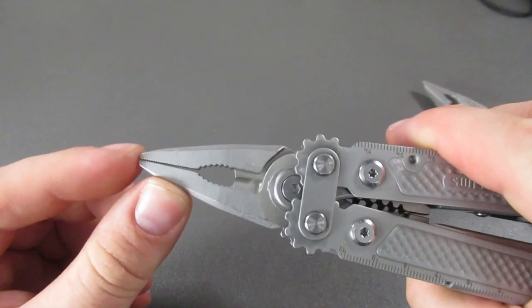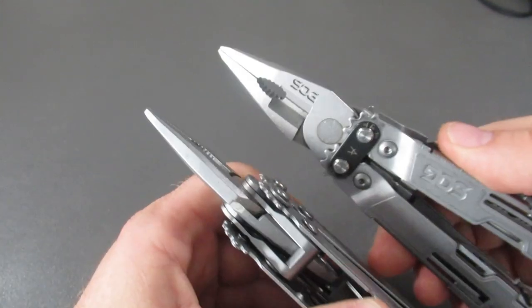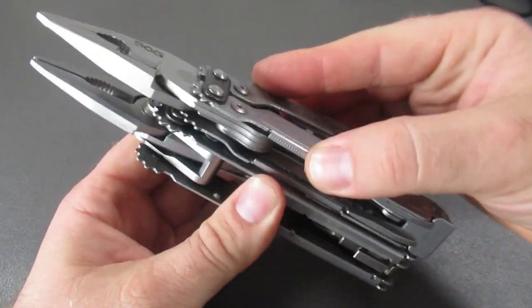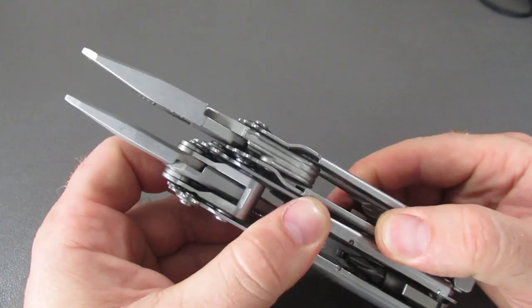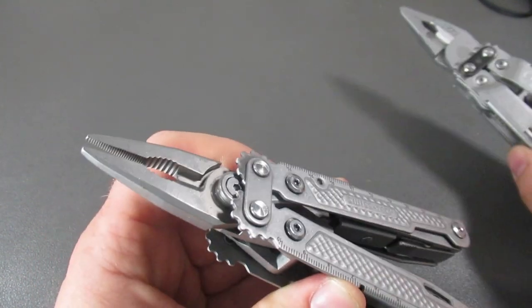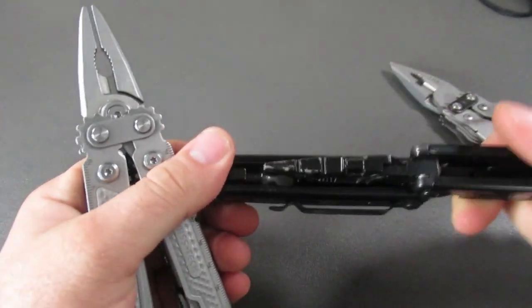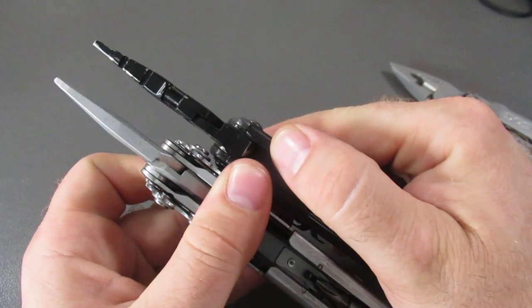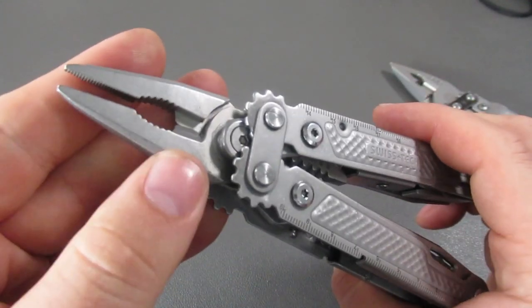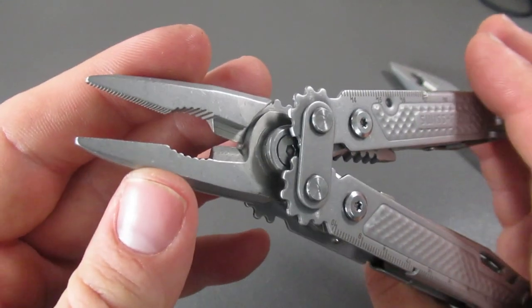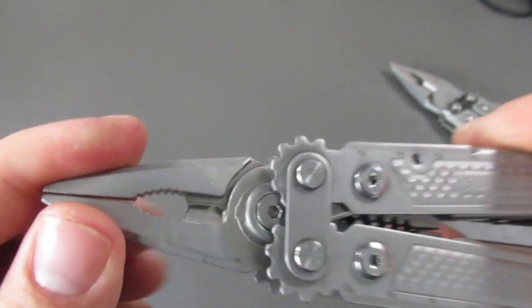And on this side, you have the needle nose pliers. This is the SOG power access deluxe in reference. So it is fairly close actually to the same frame size. Now the pliers are a little bit thicker on this. This is a little bit thinner pliers. So let's bring again the HX outdoors. This is a Leatherman wave copy, similar to the multiforce. These are a little bit thicker as well. So these are a little bit of a thinner plier system. And then you don't have removable cutters. You just have the regular cutters.